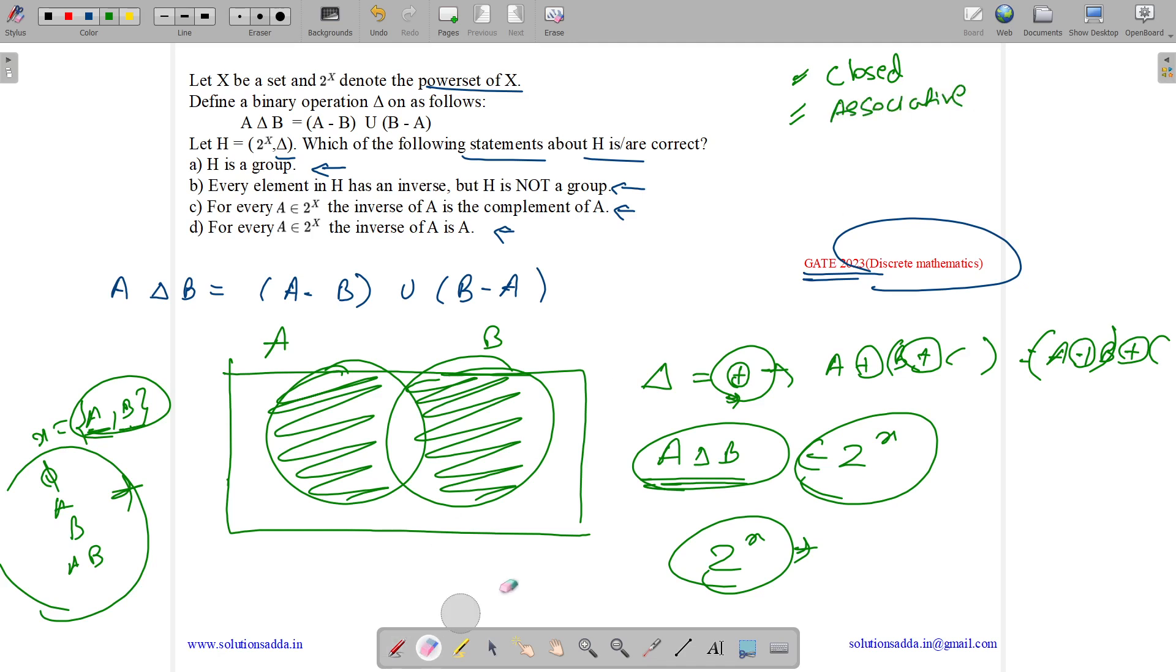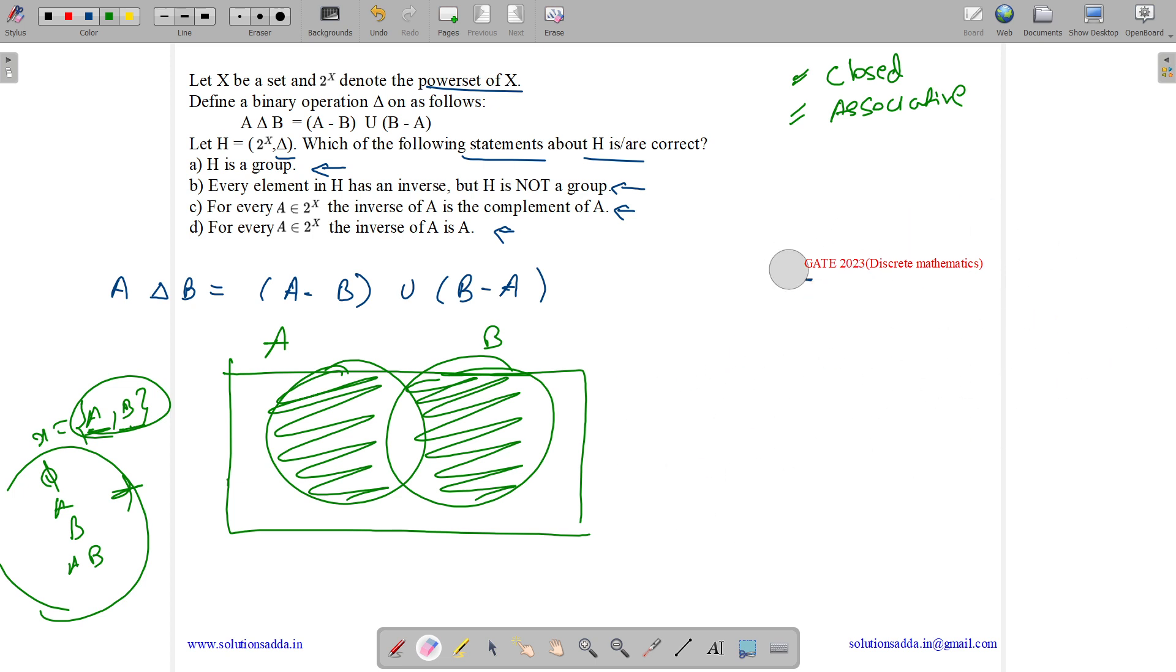Now let us see the third property which is existence of identity. So what is an identity element? Any item E can be said to be an identity for an operation delta if A applied with the operation with the identity gives the same element. So what can be the identity? Let us see if phi can be an identity or not.